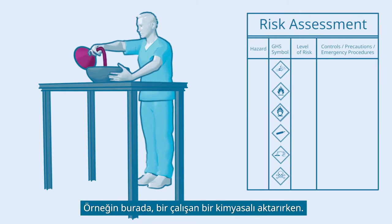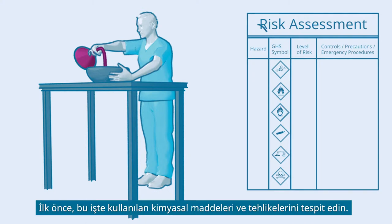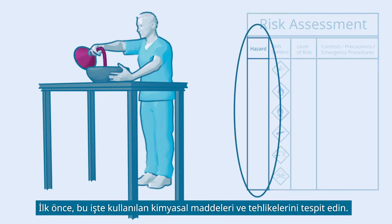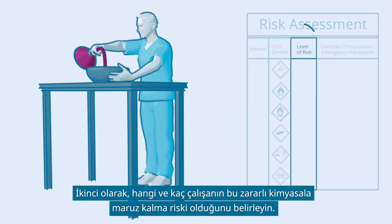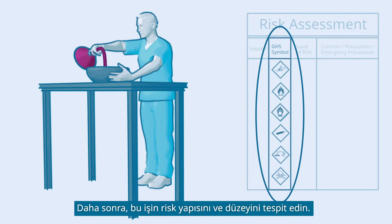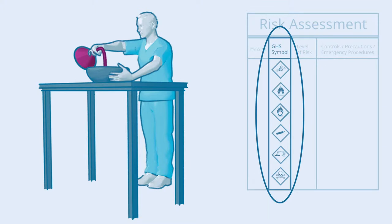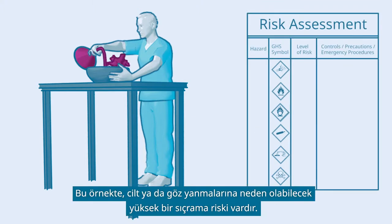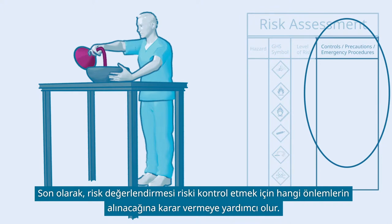For example, here when a worker transfers a chemical. First, identify the chemical substances used in this activity and their hazards. Second, locate which and how many workers are possibly at risk of exposure to that hazardous chemical. Next, identify the nature and level of risk of that activity. In this case, there is a high risk of splashing, which may cause skin or eye burns. Finally, the risk assessment helps to decide what actions to take for controlling the risk.